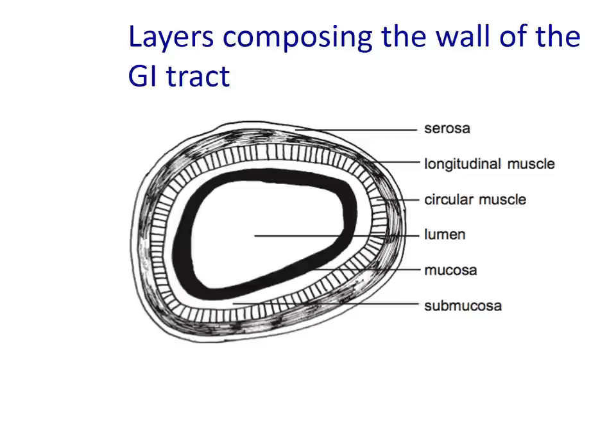Below the level of the diaphragm, the serosal layer is called the visceral peritoneum. The importance of bowel loops being able to move freely over each other is seen in patients after peritonitis, for example, when they develop adhesions. The different parts of the loops of the intestine can stick together, leading to pathology and even potentially gastrointestinal obstruction.